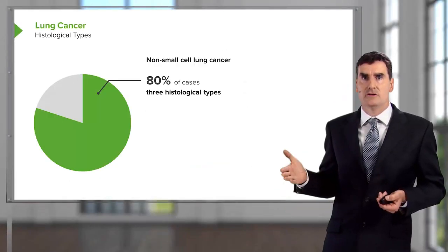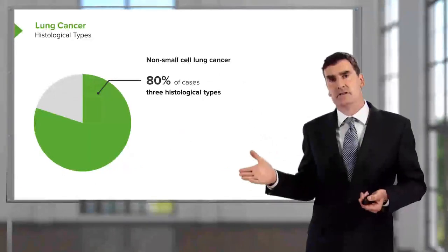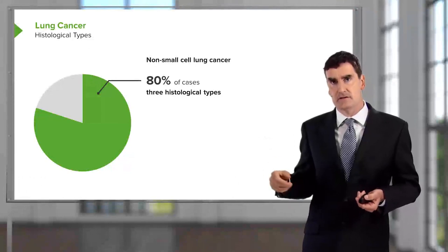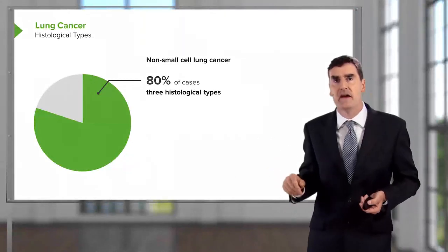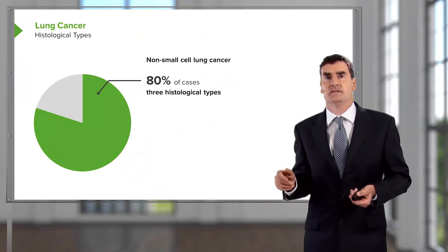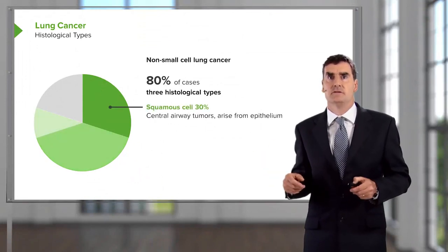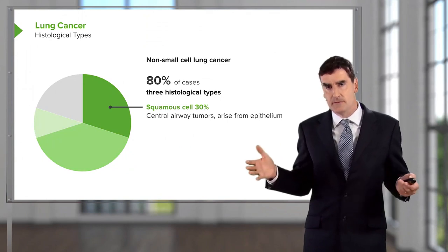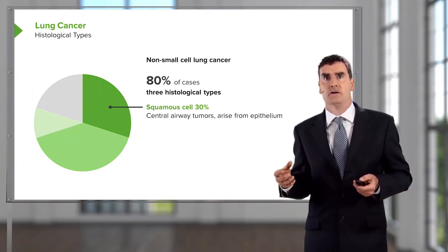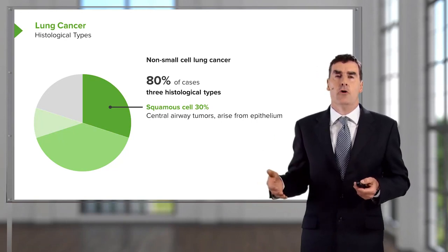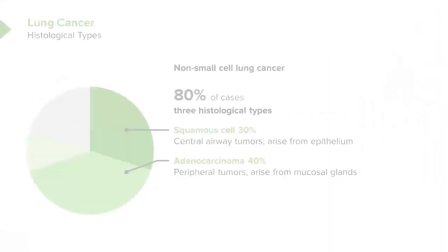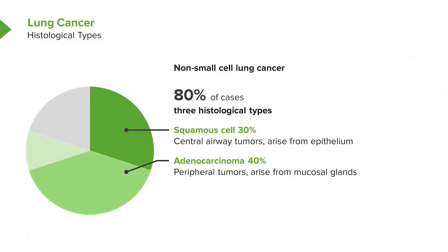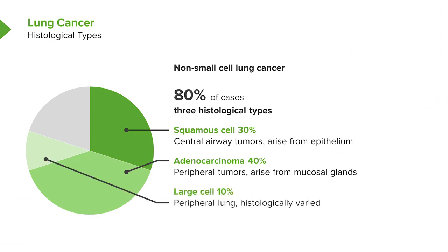There are two main histological types of lung cancer. The first is non-small cell lung cancer, which accounts for 80% of the disease, and is further subdivided into three categories: squamous cell cancers, which tend to come from the larger airways in the center of the lungs and therefore present with hemoptysis and blockage of the airway; adenocarcinomas, which in contrast tend to be peripheral tumors arising from mucosal glands in the smaller airways distally; and large cell cancers, which are the smaller proportion at only 10% of these cases, and are again peripheral.